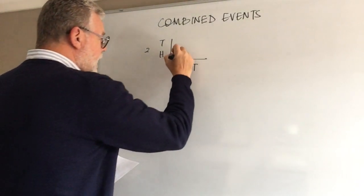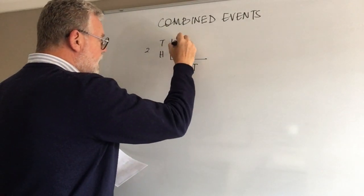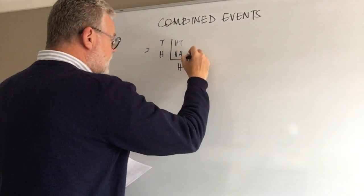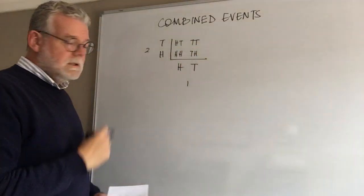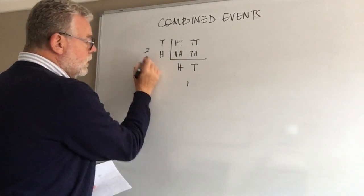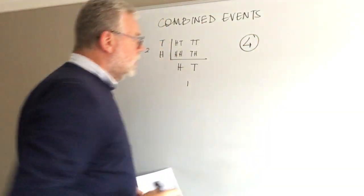We know the only options are to land on heads or tails. So I could get head and head, head and tail, tail and head, or tail and tail. That's quite straightforward. Remember we've got two options on either side, so the total outcomes are four.